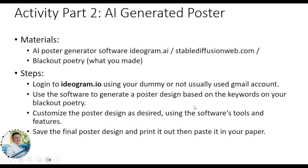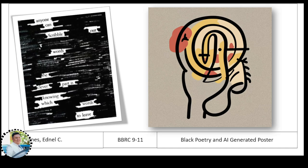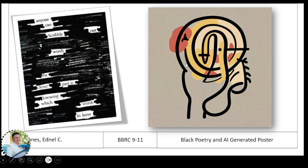Don't make it too large — just the right size. For example, with the keywords 'scribble,' 'knowing,' and 'words to leave,' the AI generated a poster with lines that look like scribbles, a brain-like figure representing knowing, and a human face. The more specific your keywords, the more relevant the output. Save the picture, print it, and paste it onto your coupon bond.